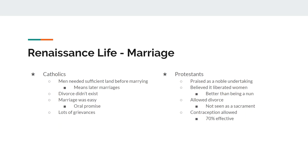Now, what was everyday life like? Let's talk about Renaissance marriages. This is right around the time of the Protestant Reformation. For Catholics at the time, men married late because they had to have enough land to support their family. Divorce essentially didn't exist. The only way to get a divorce in the Catholic Church was to have a non-consummated marriage — meaning you had not slept together — which was very hard to prove. So divorce almost never existed.